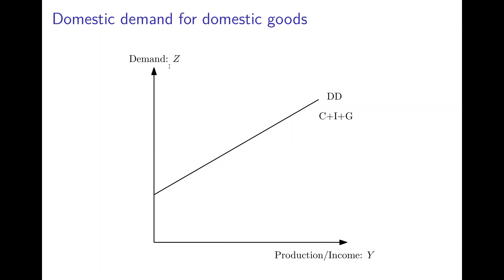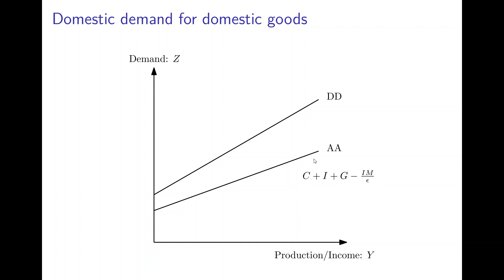We have a diagram with demand on the vertical axis and production or income on the horizontal axis. The domestic demand, the DD curve, is given by consumption plus investment plus government consumption. The demand for domestically produced goods, the AA curve, is the DD curve minus imports divided by the exchange rate. The AA curve is flatter than the DD curve because imports depend positively on income, so the difference between the two curves widens as income increases. The shaded area between the two curves represents imports.